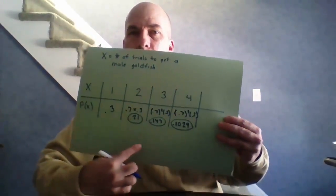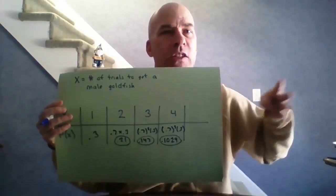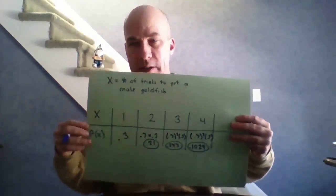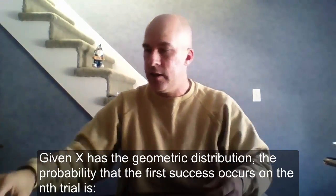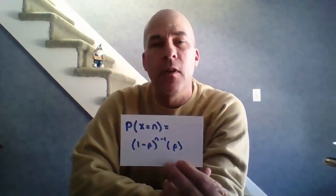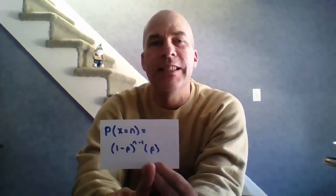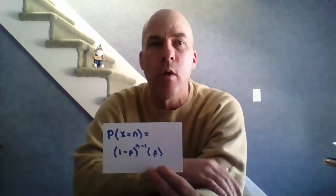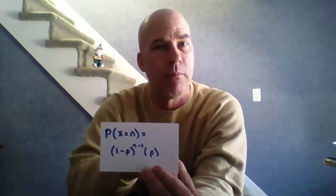Notice what's happening — these probabilities get smaller and smaller, and in theory this never ends. We'll just write out pieces of it. So given that X has a geometric distribution with probability of success p and probability of failure (1-p), the formula is: P(X = n) = (1-p)^(n-1) × p. This means we need to fail n minus one times and then finally succeed on the last trial.